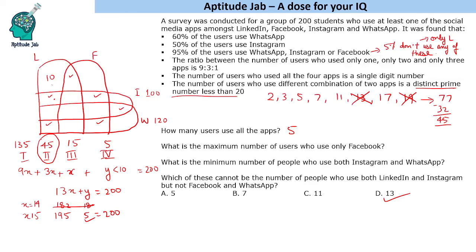Now there are a couple of questions which are on optimization, maximum and minimum. What is the maximum number of users who use only Facebook? So we have to maximize this number. That also means that we need to minimize these numbers. Now how to minimize these numbers? Of course we will put this as 1, 2 because we have to put a prime number over here.